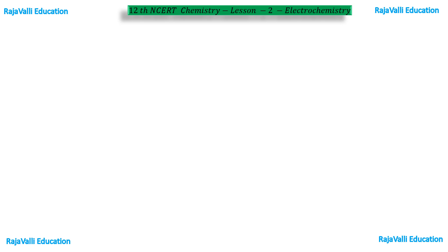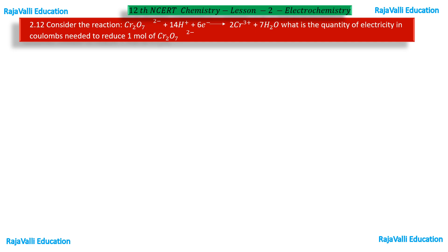Here we see one of the indexed questions from NCERT. Consider the reaction: dichromate ion plus 14H+ plus 6 electrons gives chromium 3+ ion plus 7H2O. What is the quantity of electricity in coulombs needed to reduce 1 mole of dichromate ion?